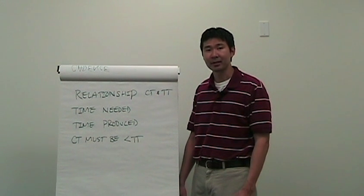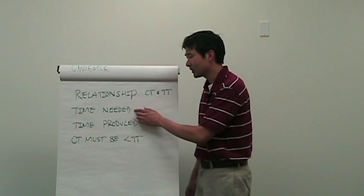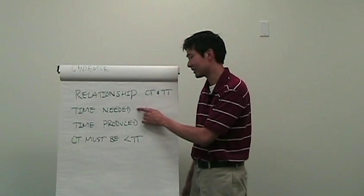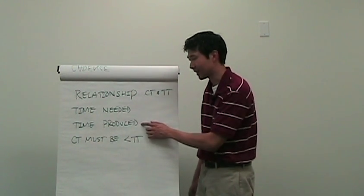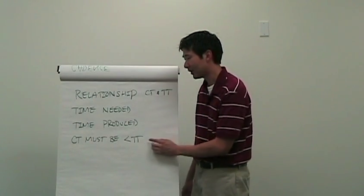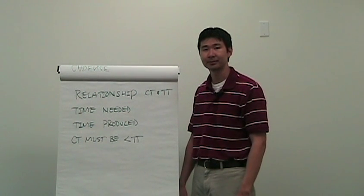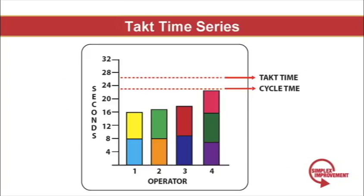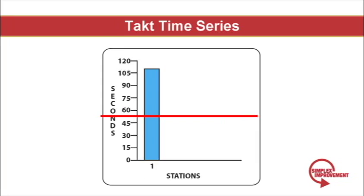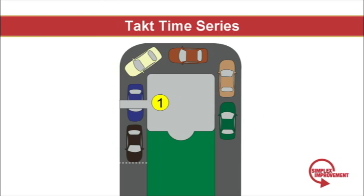Now there's a direct relationship between cycle time and Takt time. One tells us how often a part is needed — this is Takt time. The other tells us how often a part is being produced — this is cycle time. Cycle time must always be less than Takt time, never equal. Takt time tells you how often an item needs to be produced and cycle time tells you how often they are being produced. So cycle time has to be less than Takt time for us to meet customer demand. Back to the fast food example from the cycle time series: because demand was continuing to rise, the restaurant had to respond by decreasing their cycle times.